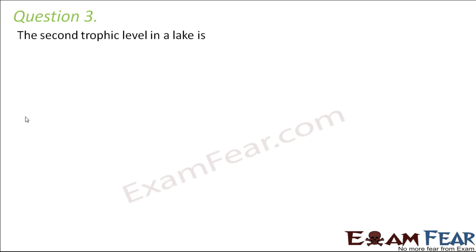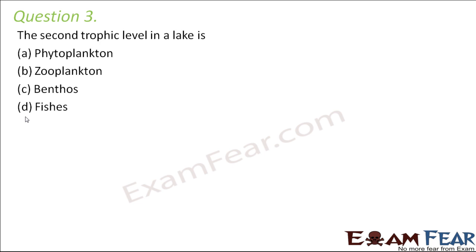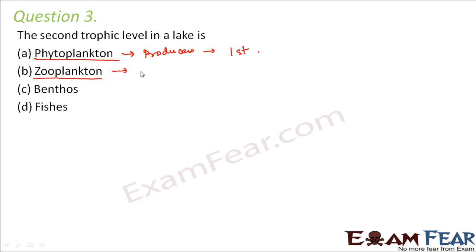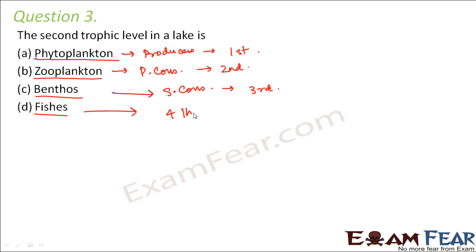Question number three: the second trophic level in a lake is zooplankton. Phytoplanktons are the producers in a lake and form the first trophic level. They are eaten up by zooplanktons, which are the primary consumers and form the second trophic level. Zooplanktons are eaten by benthos — organisms like starfish, oysters, and clams — which are secondary consumers at the third trophic level. Finally, fishes eat the benthos, forming the tertiary consumers at the fourth trophic level.